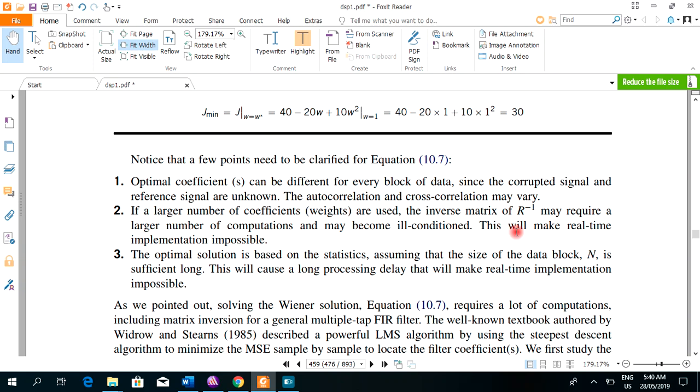What does it mean? It means that we should use small number of coefficients, not very large. If we use large, then it will be difficult for us. The last thing to clarify is that the optimal solution is based on statistics. Assuming the size of the data block is sufficient long. This will cause a long processing delay that will make real-time implementation impossible. If we have a very long block, then again it will be difficult to implement.